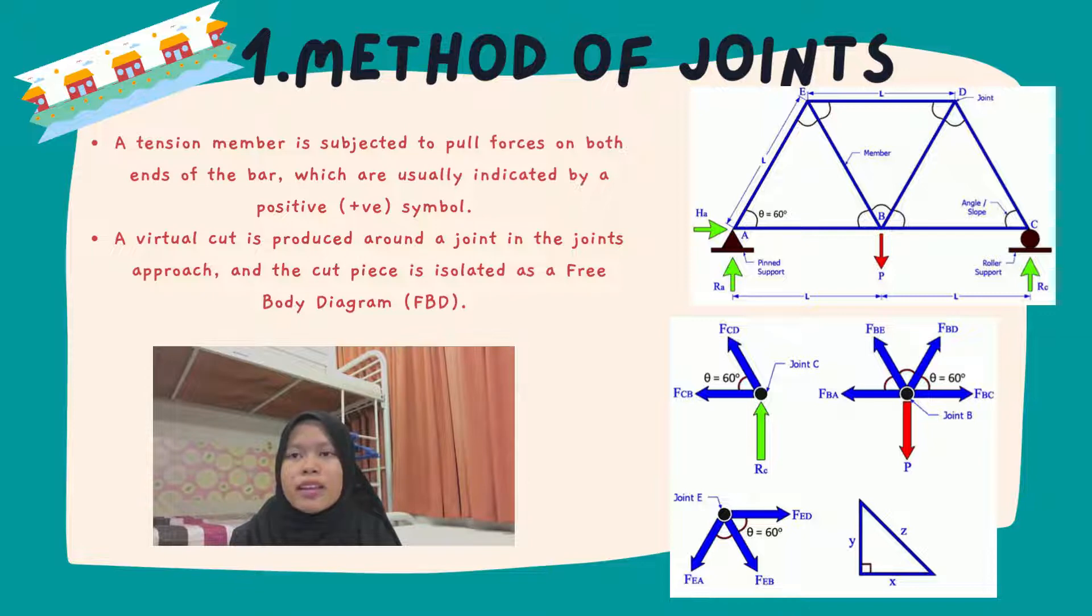A virtual cut is produced around a joint in the joint approach and the cut piece is isolated as a free body diagram. The unknown member forces can be solved using the equilibrium equations Fx equals zero and Fy equals zero. All members are assumed to be in tension first, positive response. Under the applied forces, the joint is invoked into free body equilibrium. With these equations, it means that no more than two unknowns may be determined at a time.